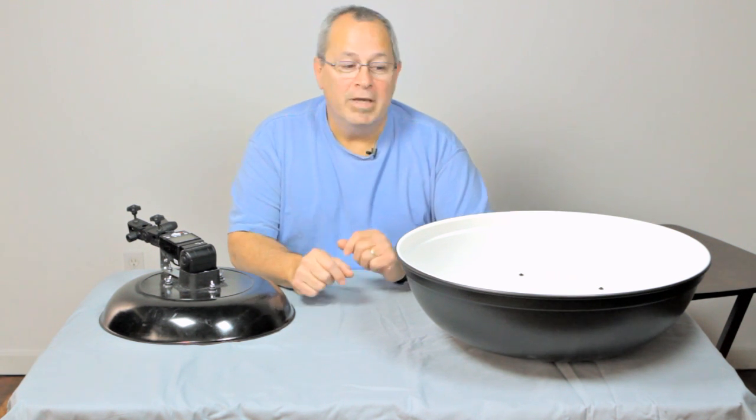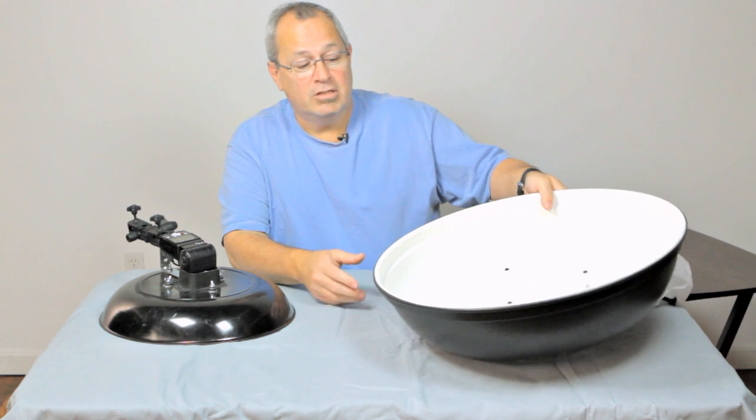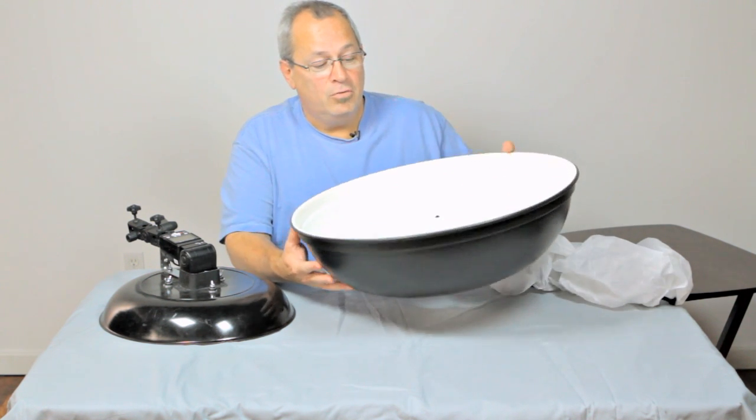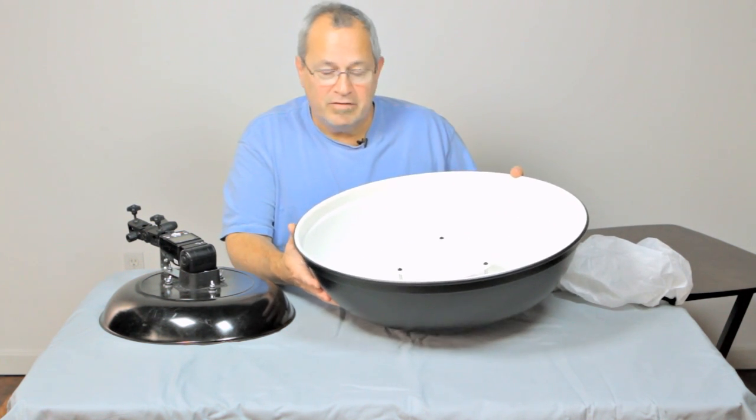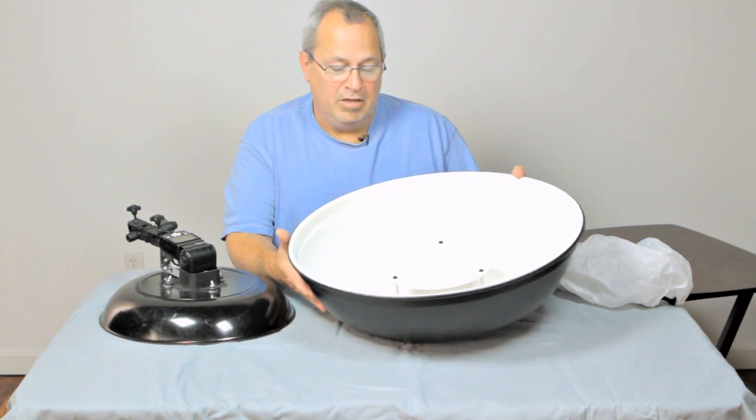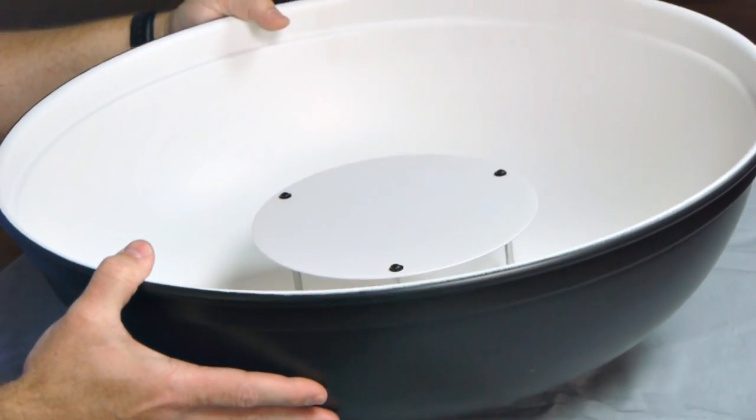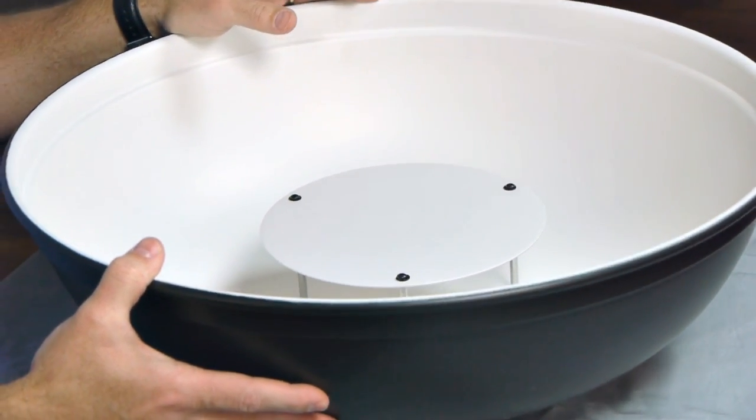Before I show you my little homemade one, I want to show you what the real deal looks like. This is a beauty dish that you would buy for between $100 and $125 to go with Alien Bees or Profoto lights. No doubt this is a beautiful dish.